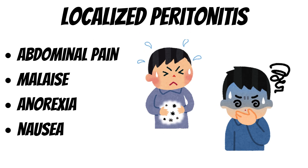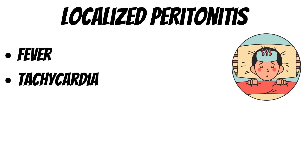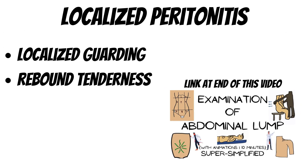Clinical features in localized peritonitis include abdominal pain usually over the mid abdomen, malaise, anorexia, nausea, fever, and tachycardia. Localized guarding and rebound tenderness are clinical examination findings felt on palpation of the abdomen.